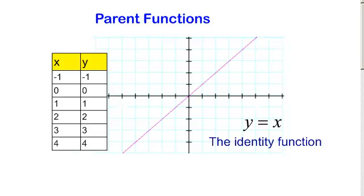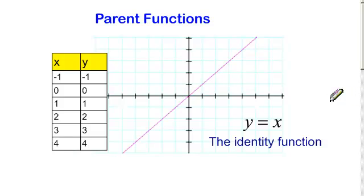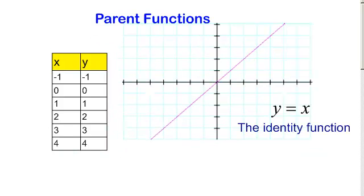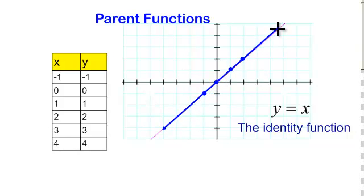The first one is y equals x. This is the diagonal line with a positive slope going right through the middle — every single x equals the y. If you don't know how to graph functions, use a table: plug in a value for x and solve for y. When I plug in negative 1, I get negative 1; plug in 0, I get 0; plug in 1, I get 1. Plot a few points, draw a line through them, and that is the graph of y equals x.